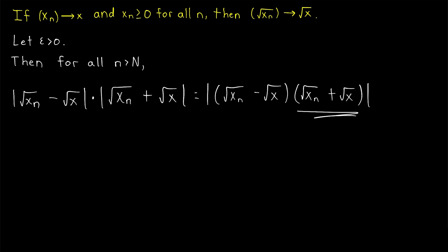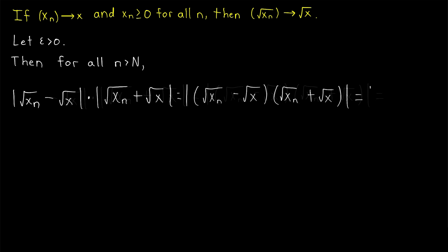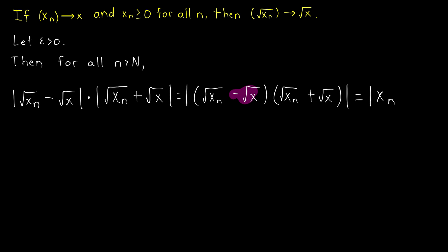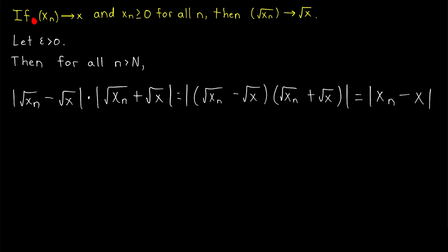Why did we multiply by this conjugate? When we go through the multiplication, we get square root of xn times square root of xn, which is xn; then the middle terms — square root of xn times square root of x and minus square root of x times square root of xn — cancel out; and all we're left with is minus square root of x times square root of x, which is minus x. So instead of a difference of square roots, we now have the difference of xn and x, which is wonderful because we can make this expression as small as we want since we know xn converges to x.